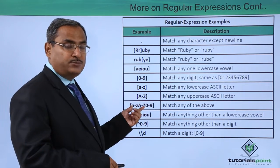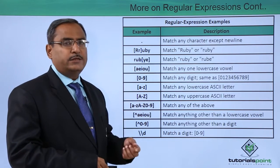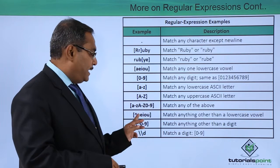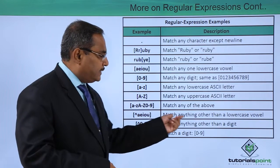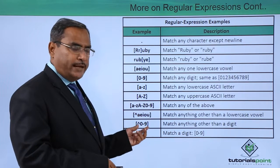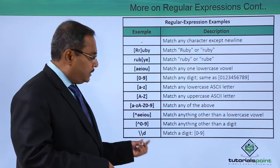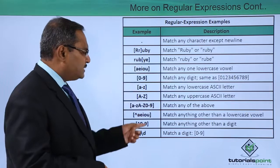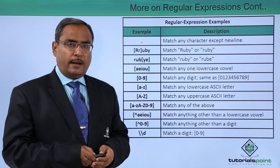`[^aeiou]` — with the caret meaning 'not' — matches anything other than a lowercase vowel. `[^0-9]` matches anything other than a digit. `\d` matches a digit ranging from 0 to 9, equivalent to `[0-9]`. This gives a clear conception of how regular expressions can be used in Scala programming.